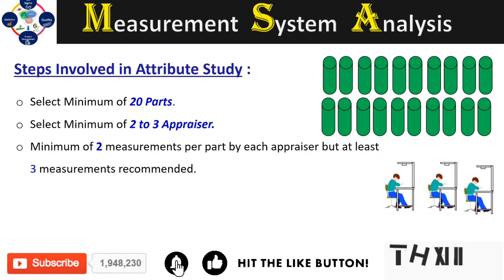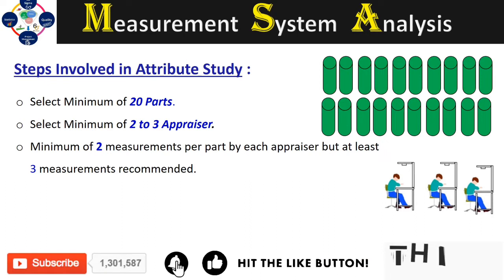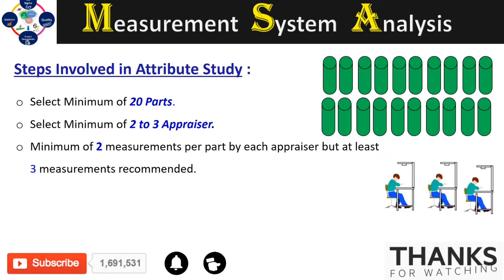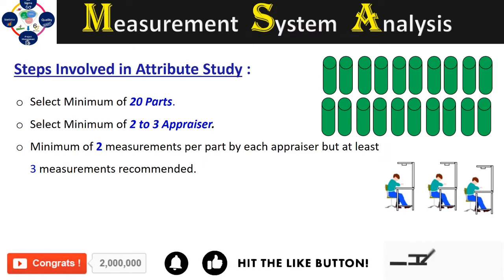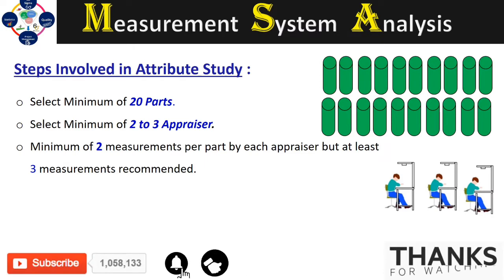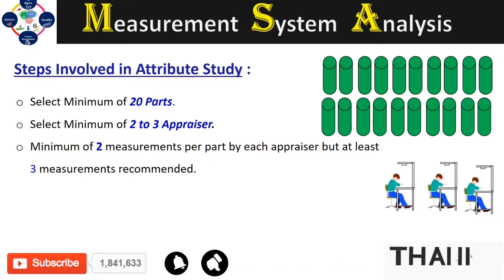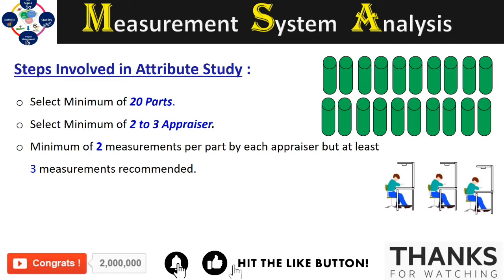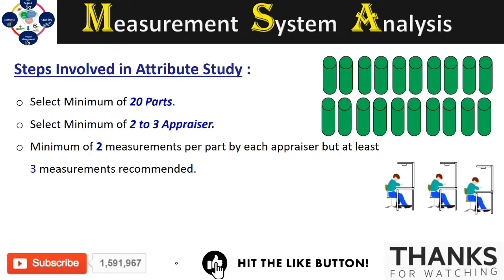It is normally recommended that 20% of the total parts be just outside the specification limit. The bad parts should not be too far outside the specification limit — they should be only about 10% outside the overall specification limit. In the coming videos, I will show you how to calculate the bad part dimensions.